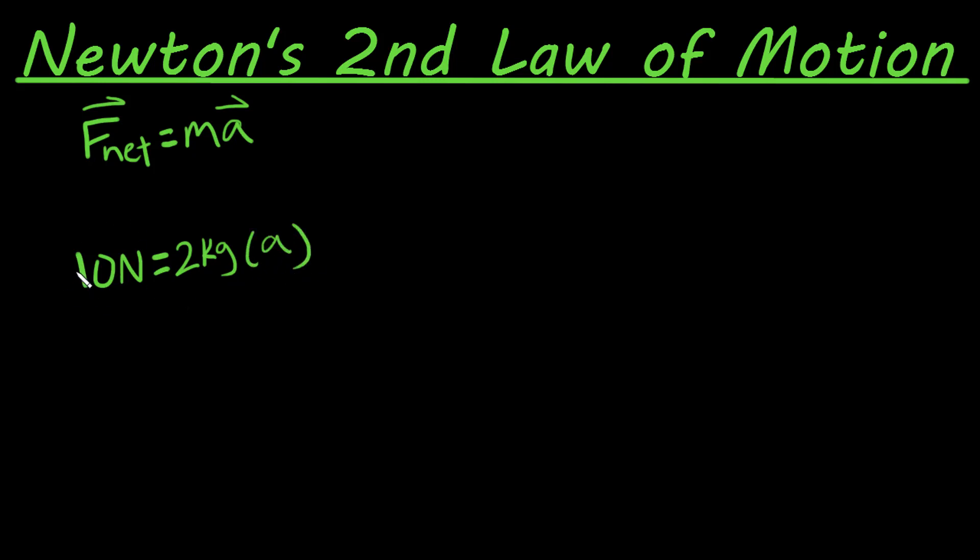If we're pulling on this object with a force of 10 newtons and the object is 2 kilograms of mass, we just divide that to find our acceleration. Our acceleration on this object is going to be 10 newtons divided by 2 kilograms, which is going to give us 5 meters per second squared. That's our acceleration of an object that is 2 kilograms with 10 newtons of force pulling on it.